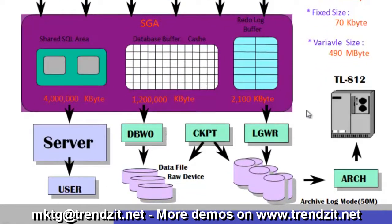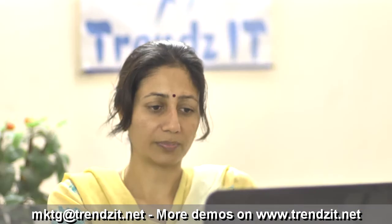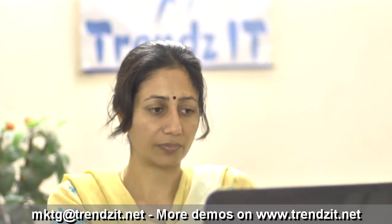It consists of the memory structure like SGA, along with that it also consists of the processes which are there in the RAM. It is always with the help of these processes that Oracle tries to access the files which are there on the hard disk. A couple of the processes are mandatory processes whereas a couple of them are optional processes.